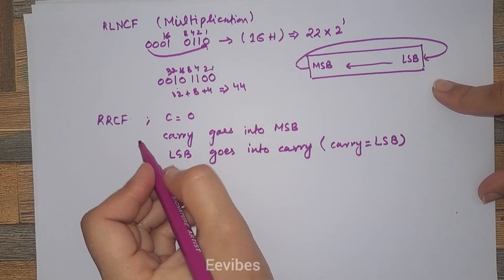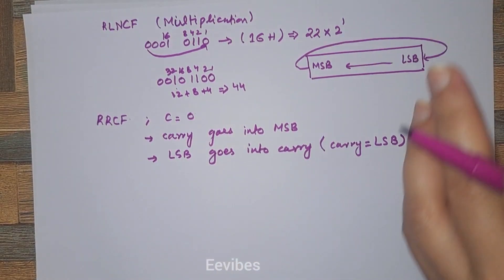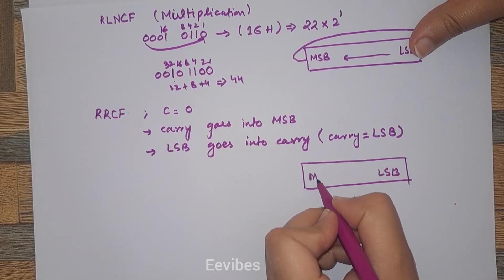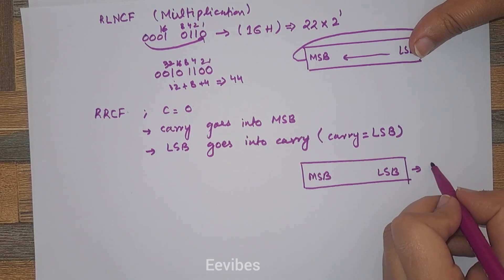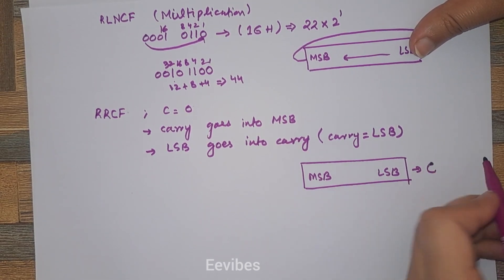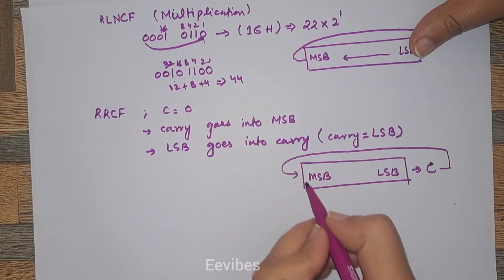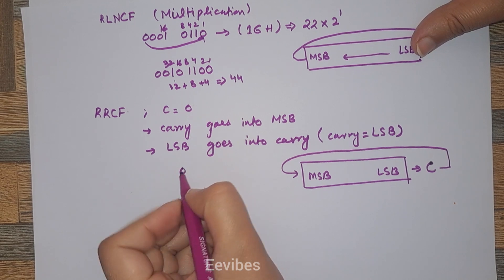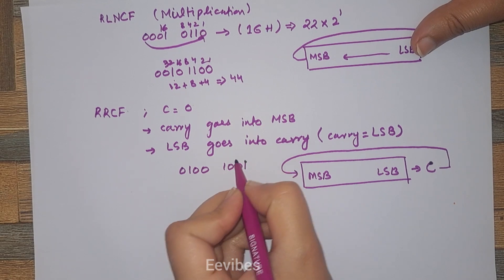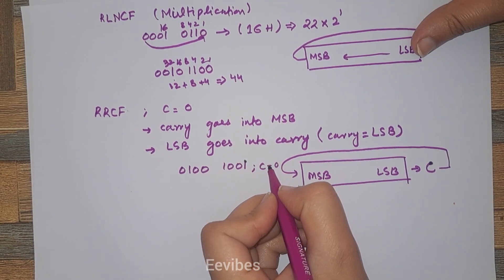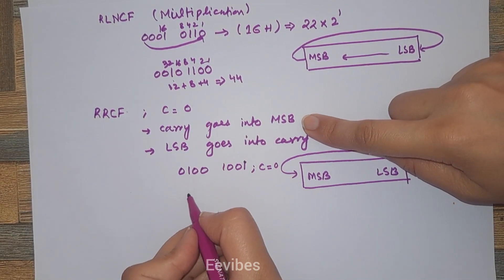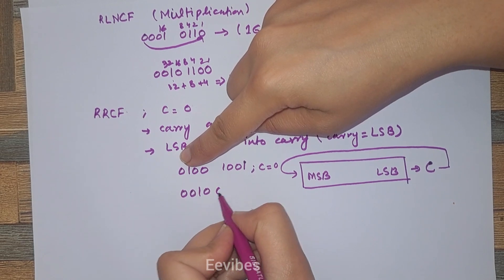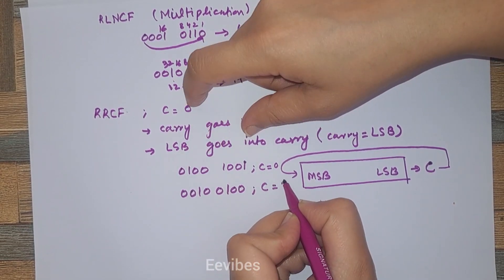The new value of the carry is obtained from the LSB. This instruction is implemented in two steps. Let's consider the example where the contents are 0x49: 0100 1001, while carry equals 0. The carry is placed into the MSB, so you will have 0010 0100, and the new updated carry will be equal to 1.